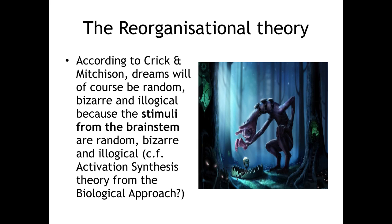Think about these random signals from the brainstem. This is basically activation synthesis, if you remember it — all these powerful signals coming up from the brainstem. As they crash through the cortex of the brain, it makes sense that they're going to activate some pretty random things along the way: random images, things you've seen, people you know. According to Crick and Mitchison, of course dreams are going to be random, bizarre, and illogical — because the stimuli from the brainstem are random. Dreams are just random images twigged as the brain is pruning memories inside your mind.